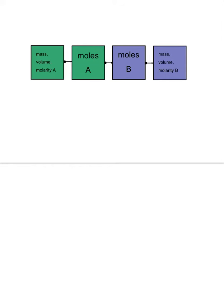In a stoichiometry problem, we may not be able to go from the moles of one substance to the moles of another substance right away using the coefficients in the balanced chemical equation. Sometimes we'll start with units other than moles and will have to do a conversion, and sometimes the answer may require units other than moles, so we will have to do another conversion.